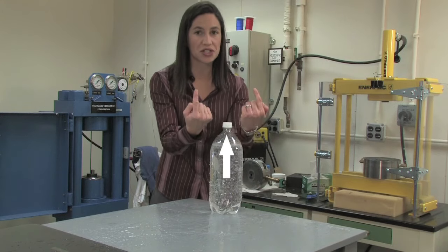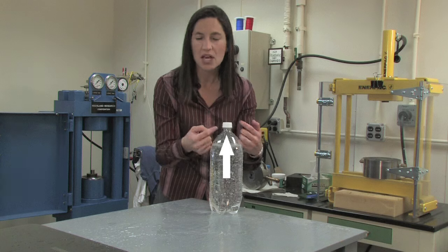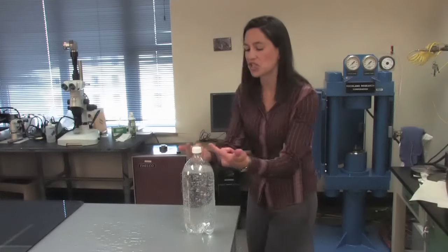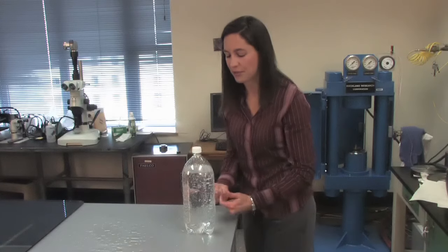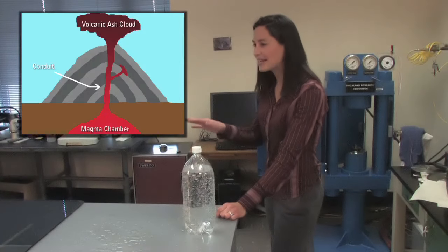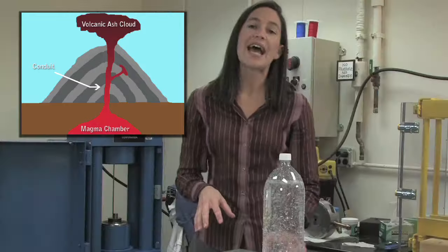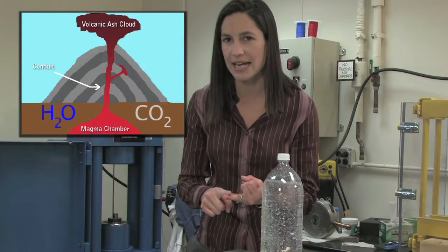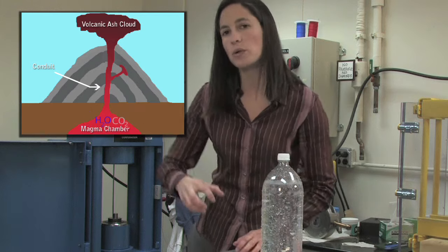The carbon dioxide, when the pressure goes down, doesn't want to be dissolved in the water anymore. So the carbon dioxide comes out, forms bubbles, the bubbles coalesce, and they are less dense, and they start moving towards the surface as fast as they can. The water can't get out of the way, so a combination of gas and water shoots out the top of this seltzer bottle.